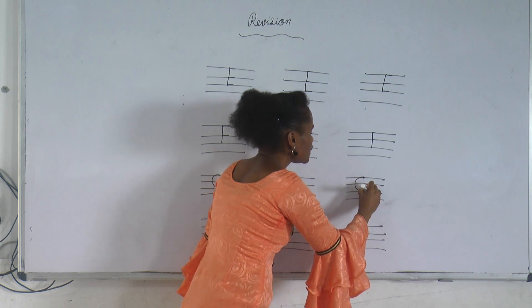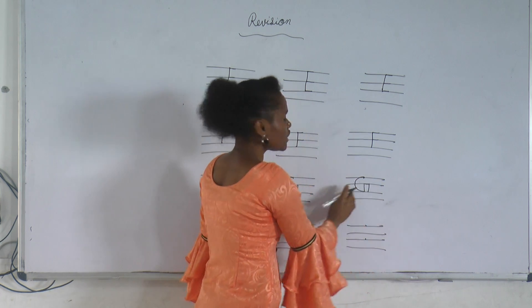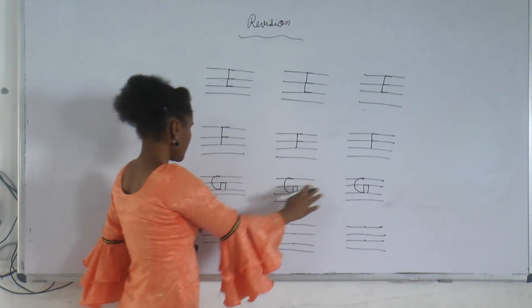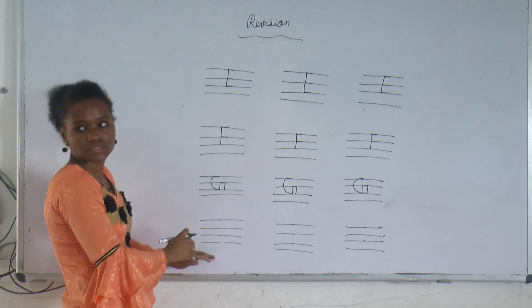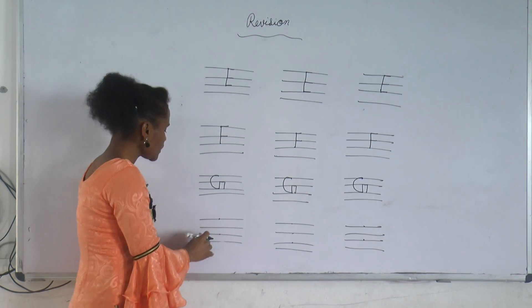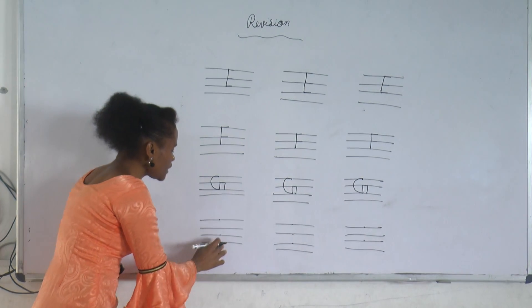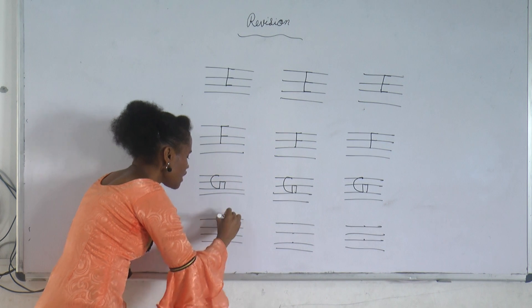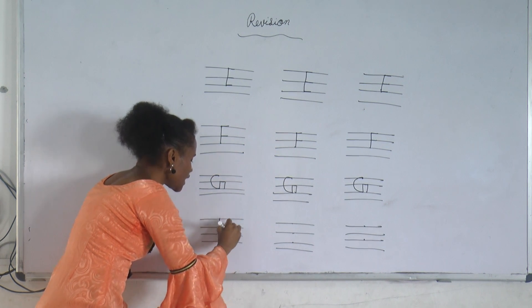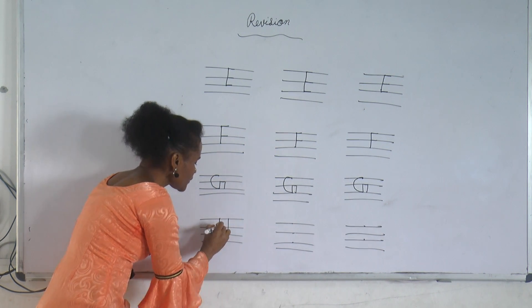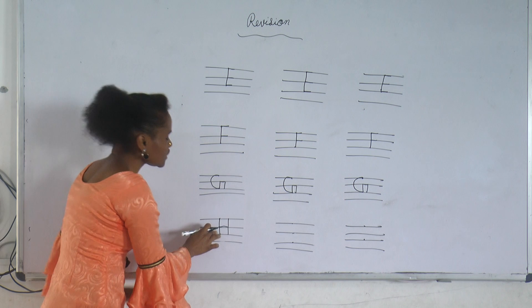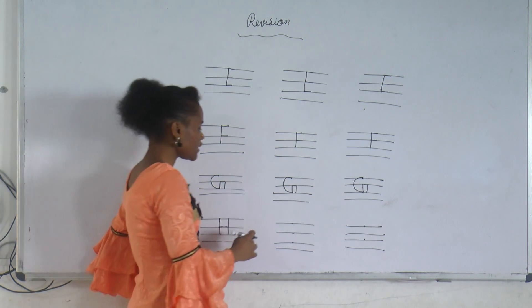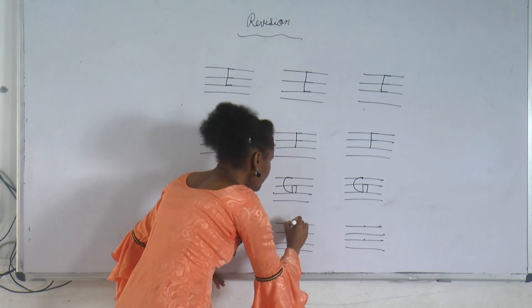Last letter is H. I will show you how to write. Standing line, another standing line, sleeping line. H. H for hat.